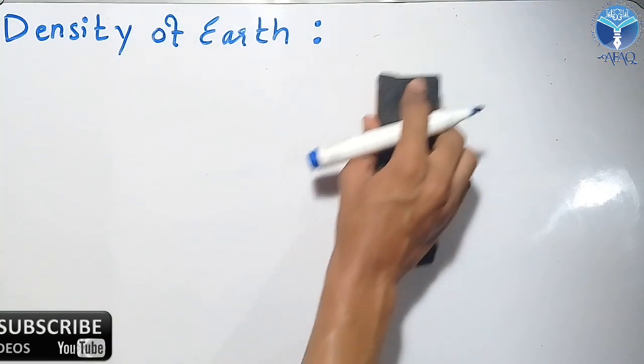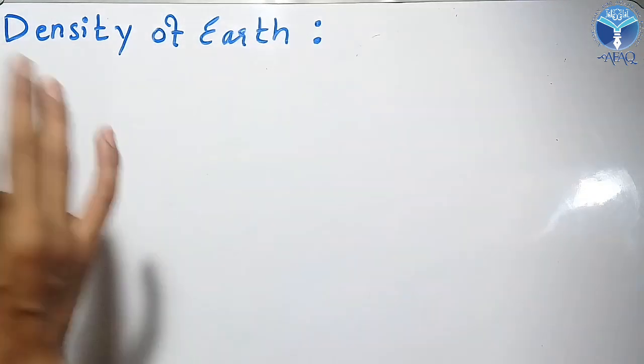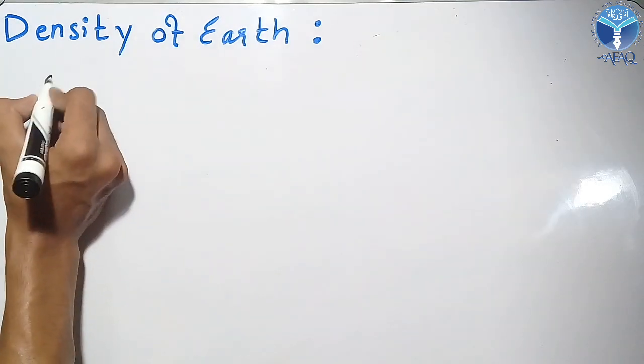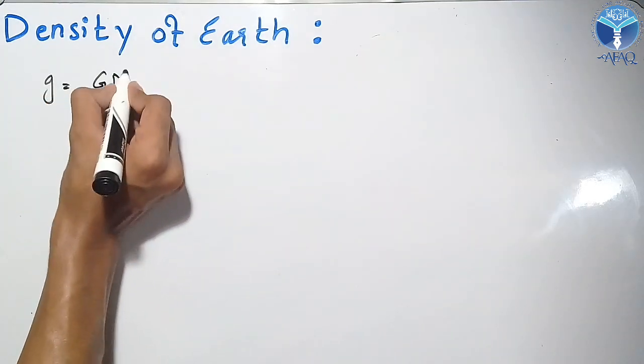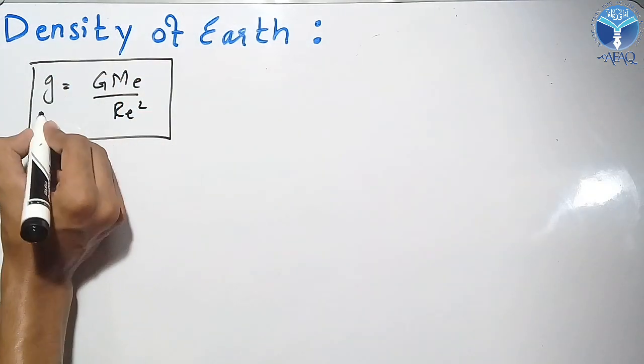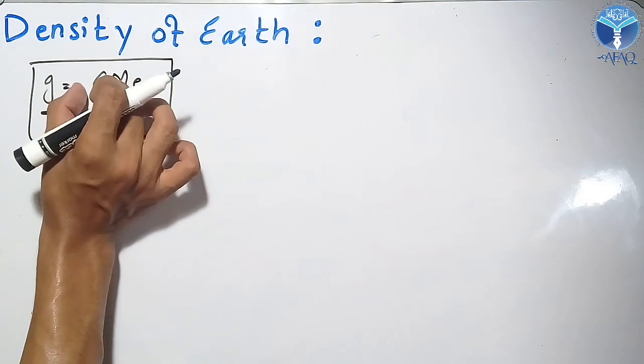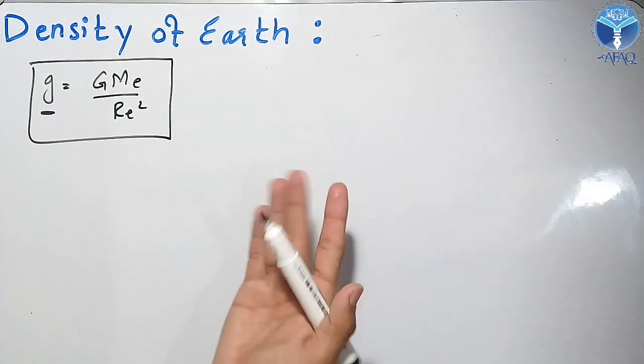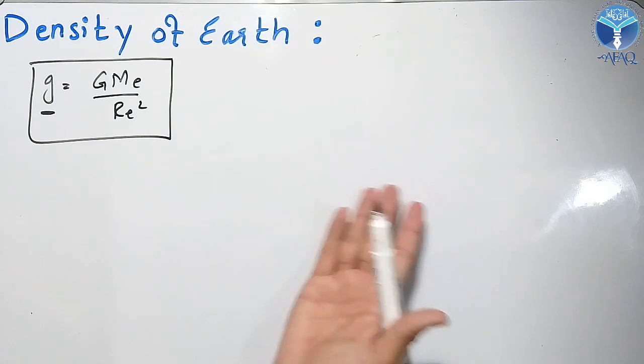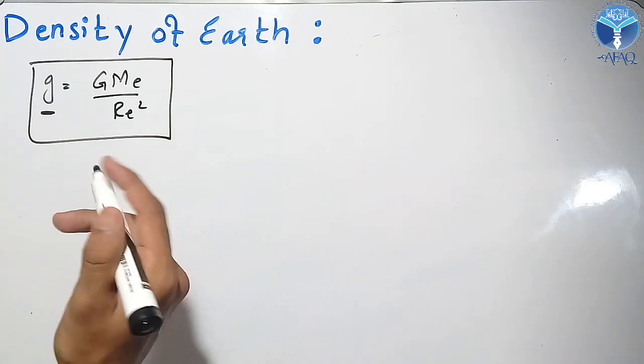If you haven't subscribed to my channel yet, please click the subscribe button and the bell icon so that you receive our latest videos. To understand the density of Earth, we need this equation: g = GMₑ/Rₑ². In this equation, g is the gravity of Earth (9.8 m/s²) and G is the gravitational constant.